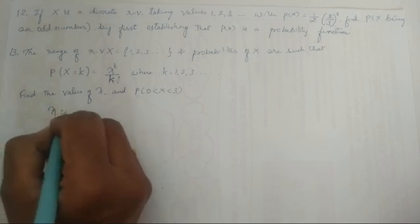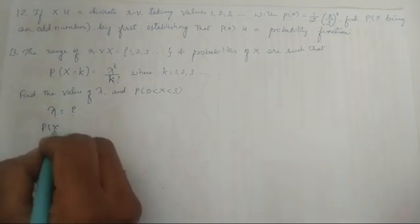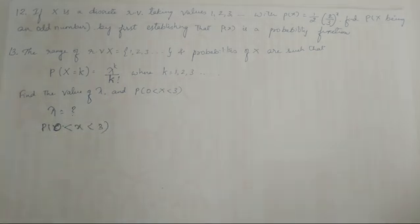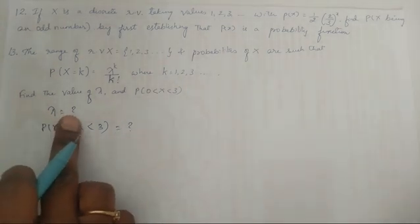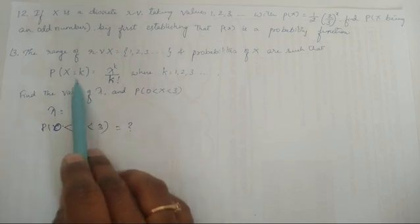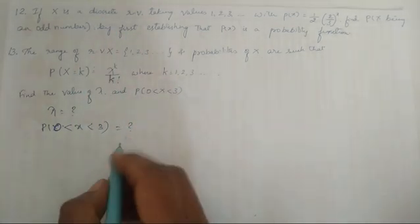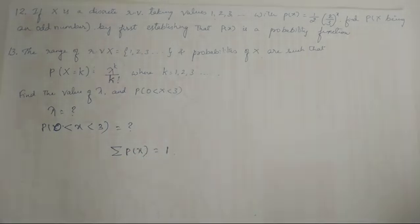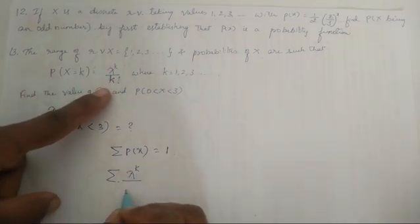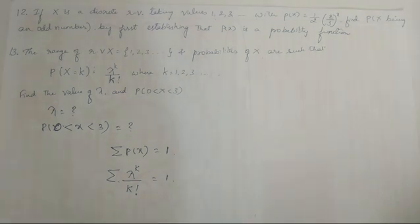So we first need to find λ, and then find p(0 < x < 3). Since it is a probability function, the summation of p(x) equals 1. That means the summation of λ^k divided by k factorial equals 1, and using this we find the value of λ.